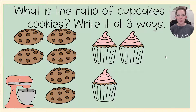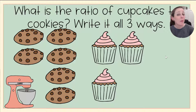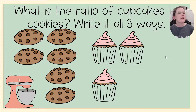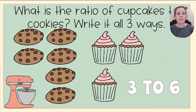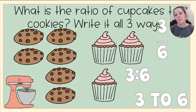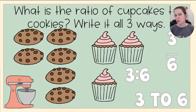Now a different question: what is the ratio of cupcakes to cookies? Cupcakes come first, so I count those first. How many cupcakes do we have? Three. To how many cookies? Six. So my ratio is three to six. And again, I'm going to write that in all three ways — with the word 'to,' with a colon, and written so that it looks like a fraction.